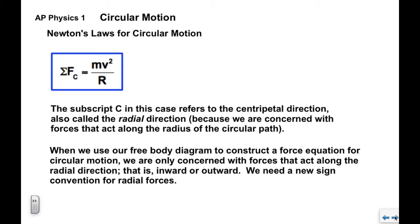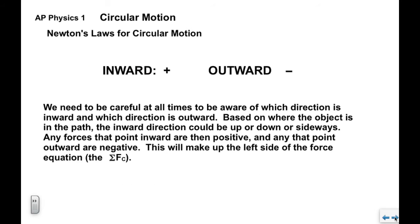The subscript c of course refers to the centripetal direction which is also called radial because we're concerned with forces that act along the radius of the circular path, in the direction of the radius. When we use our free body diagram to construct a force equation for circular motion we're only concerned with forces that act along this radial direction, that is either in or out. As such we need a new sign convention for centripetal or radial forces.